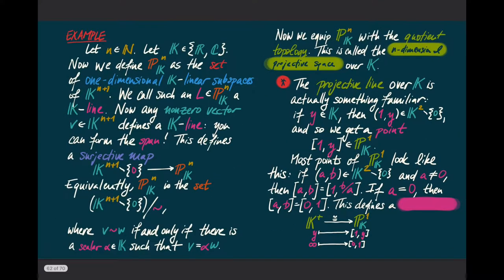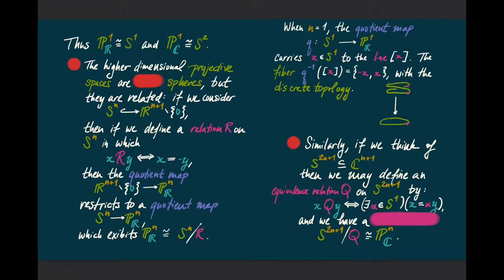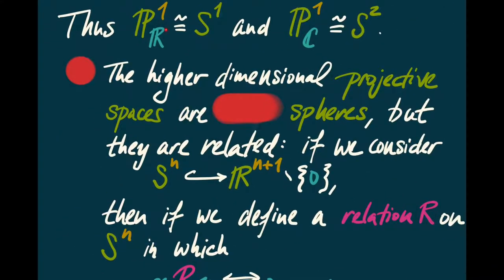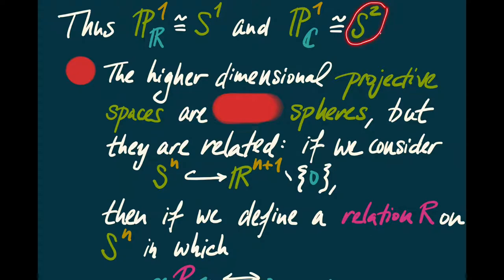The projective line over the reals is homeomorphic to R⁺, which is homeomorphic to S¹ — recovering the circle. The projective line over the complexes is homeomorphic to C⁺, which is R²⁺, homeomorphic to S². So the projective lines are just our old friends the spheres.